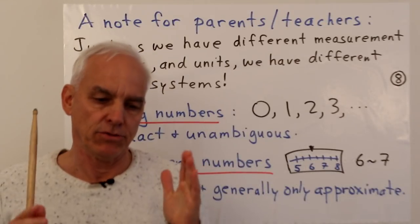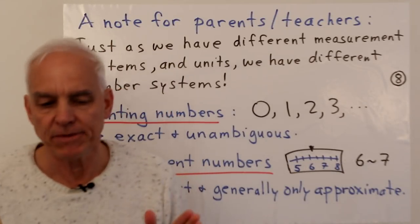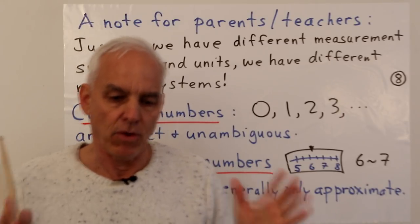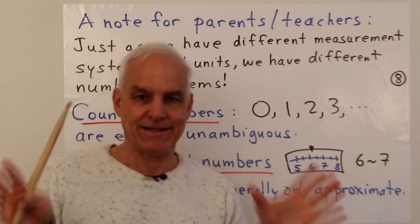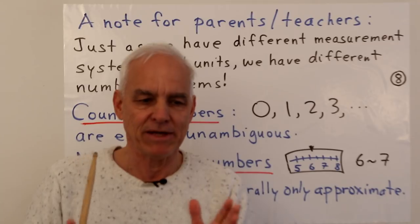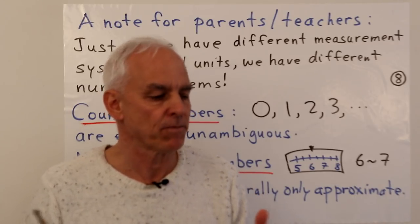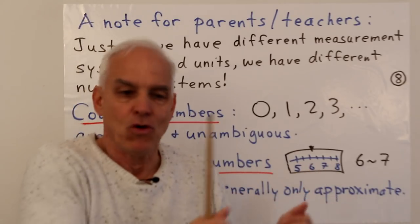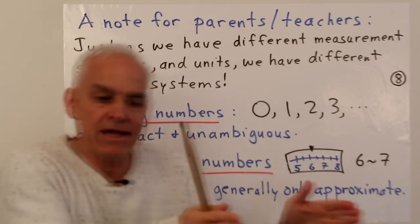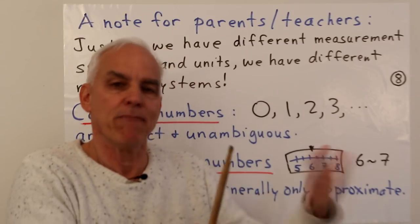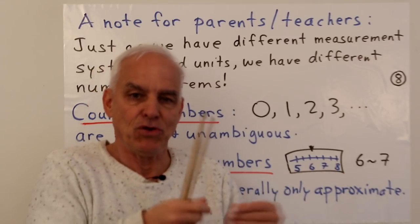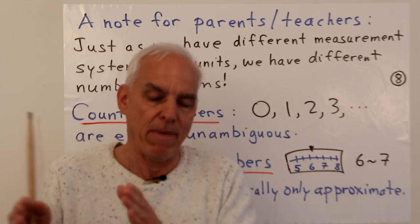A note for parents and teachers — not something to tell students directly, but important to be aware of. When using numbers in the world, there are actually different systems available. Just as there are different measurement systems for weight, length, or temperature, within any one framework there are different unit systems — metric or imperial — and even within the metric system, different units like kilograms, grams, or metric tons.